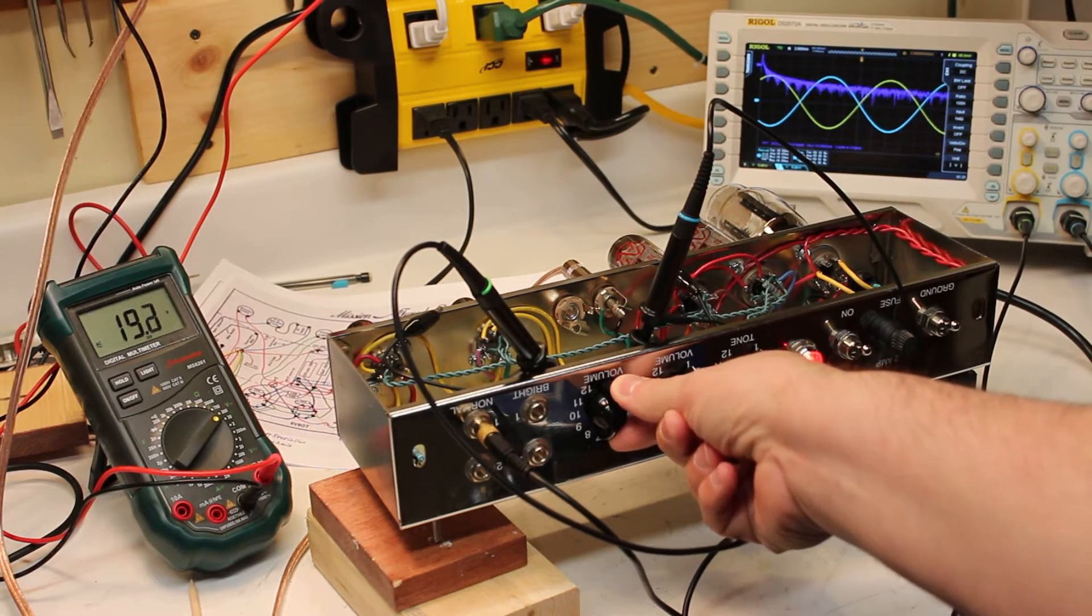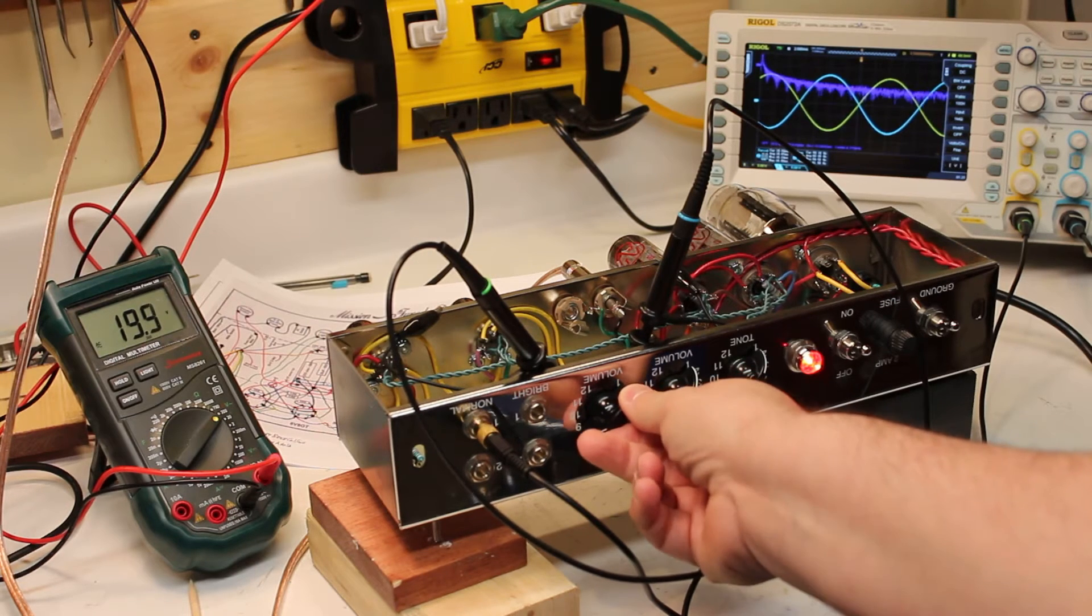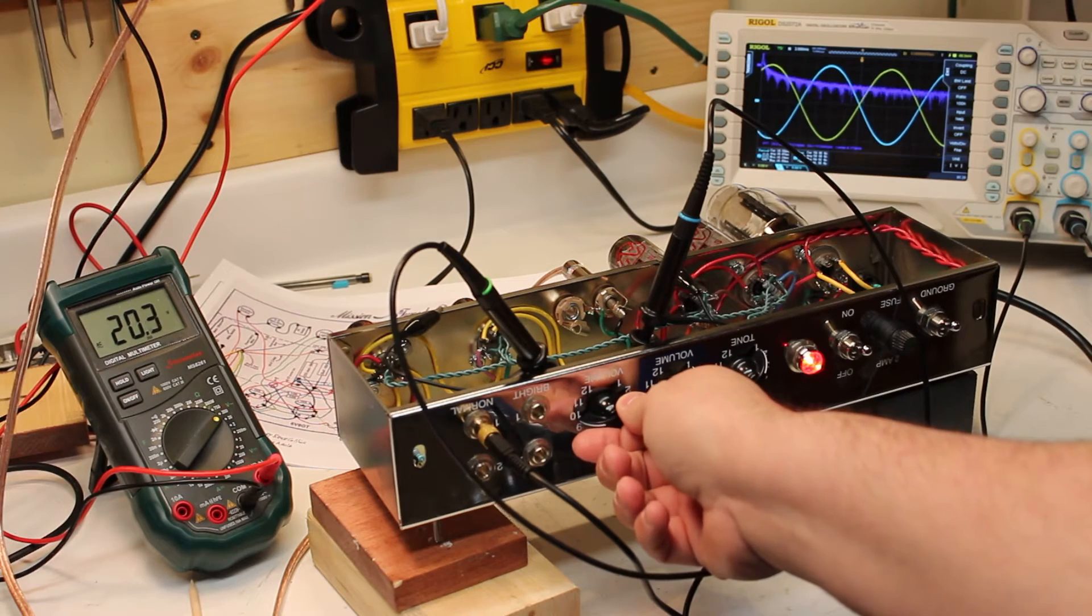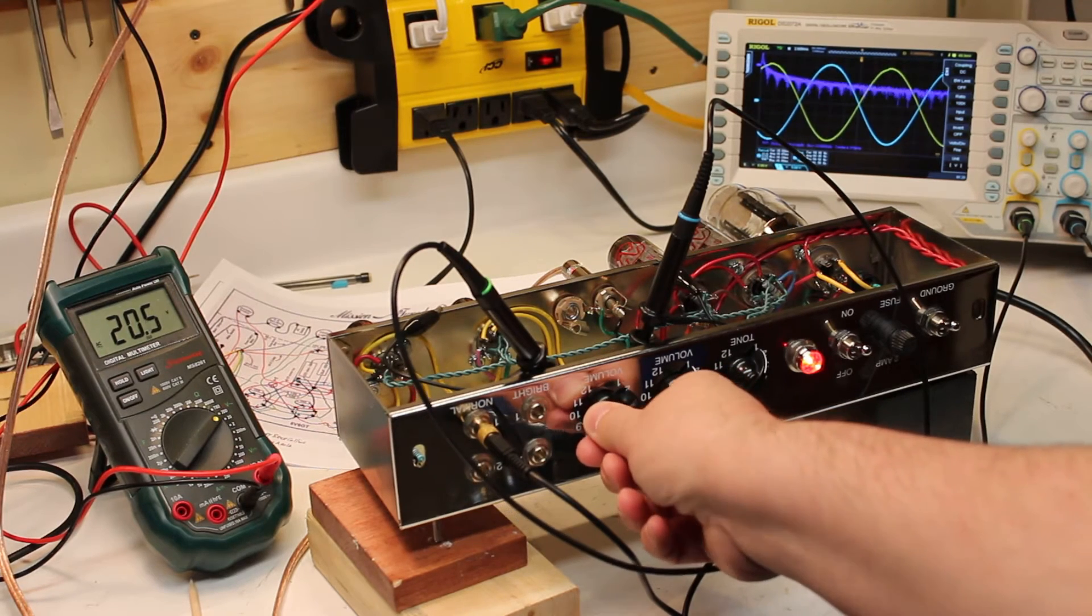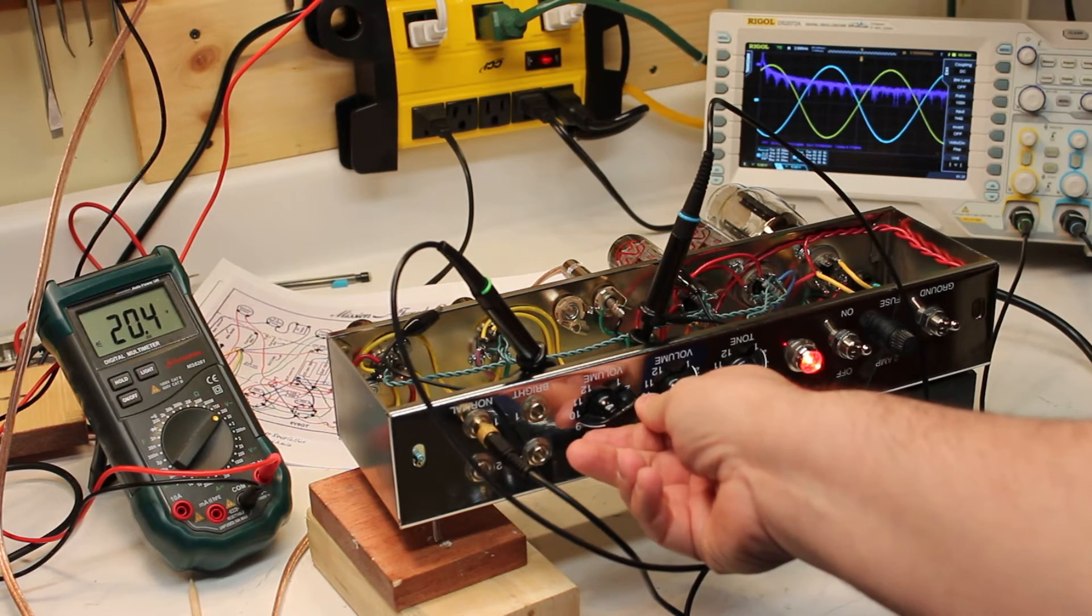As I get to 7, I'm at 19, you can see the sine waves are still climbing. Right now I'm right at 10, between about 9 and a half, I'm at 20.4 volts.